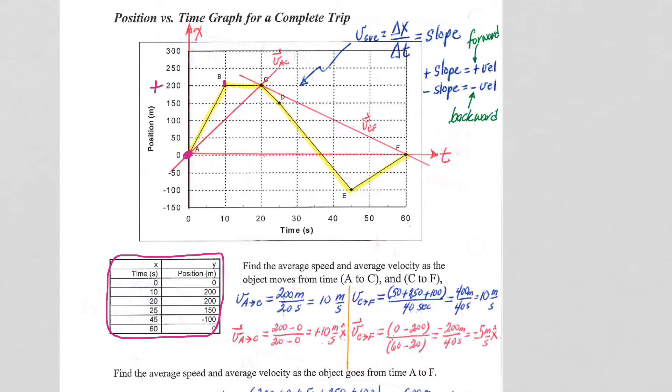Over the next 10 seconds we didn't move, took a break. Position positive 200, then went backwards to position positive 150. Backwards again, all the way down here to position negative 100.